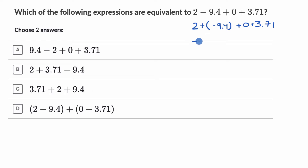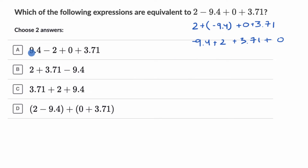For example, we could write this as negative 9.4 plus two plus 3.71. We could ignore the zero or put that anywhere. But what we see in the first choice, they don't have a negative 9.4 — they have a positive 9.4. So I really don't know how I can reconcile this, and I'm going to rule that one out.